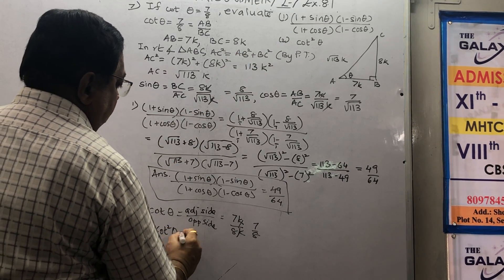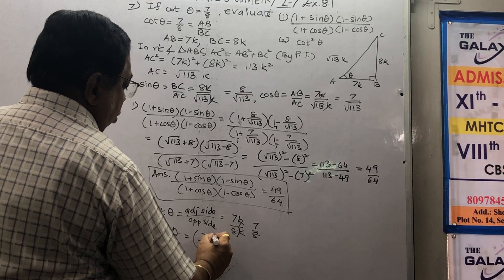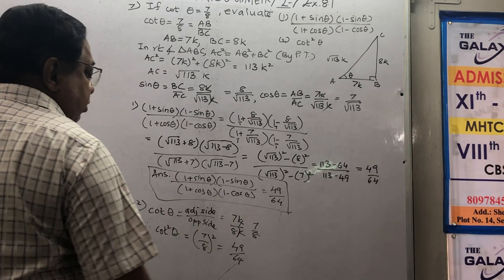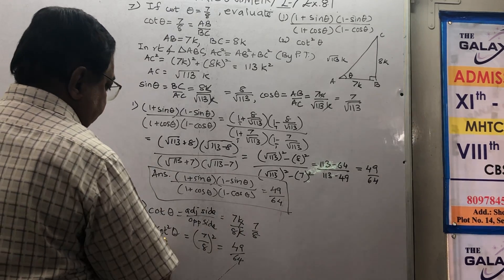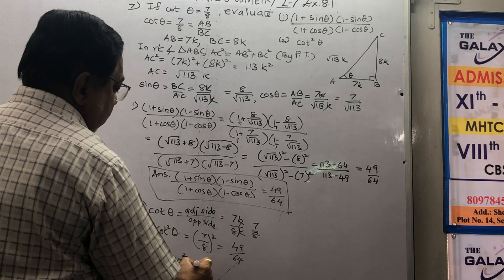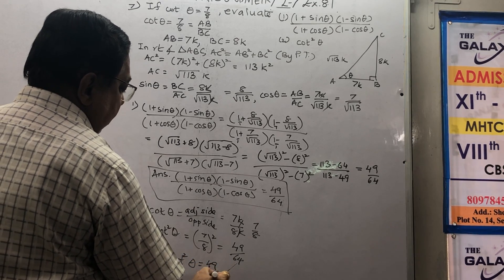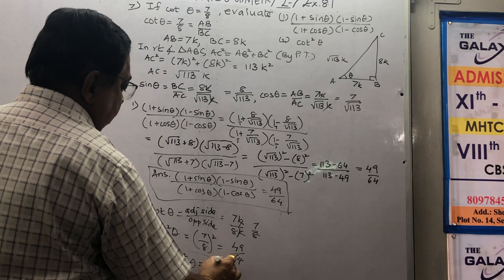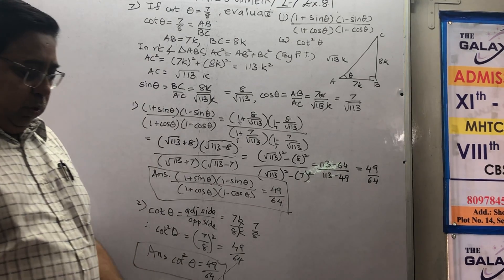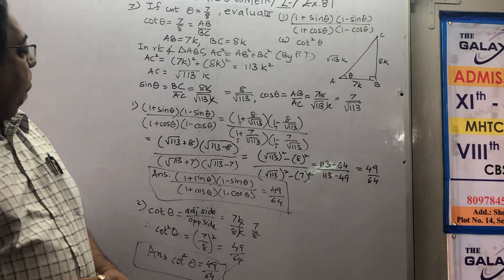For the second part: cot θ = 7/8. Therefore cot² θ = (7/8)² = 49/64. Please write the answer, square-box it, and leave it there. This is how we complete sum number 7.